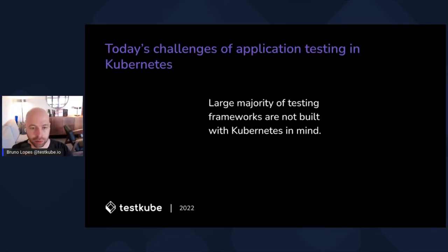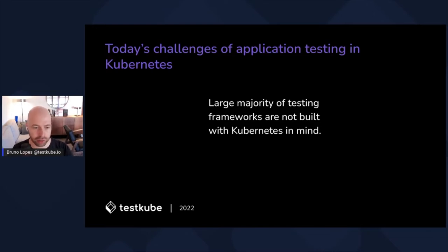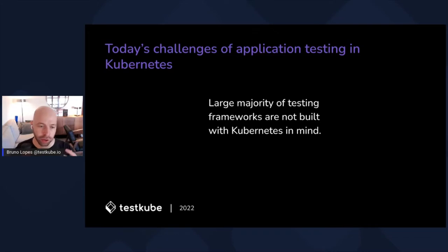Today's challenges of application testing in Kubernetes: the first one is that the large majority of testing frameworks are not built with Kubernetes in mind. It's not good or bad — our tools are designed to test specific scenarios. For example, k6 is for load testing, Postman is built to test APIs. They are not tools that solve all your problems; you need to integrate them with your CI/CD pipeline, handle authentication, and Kubernetes is always an afterthought, not something designed from the ground up.